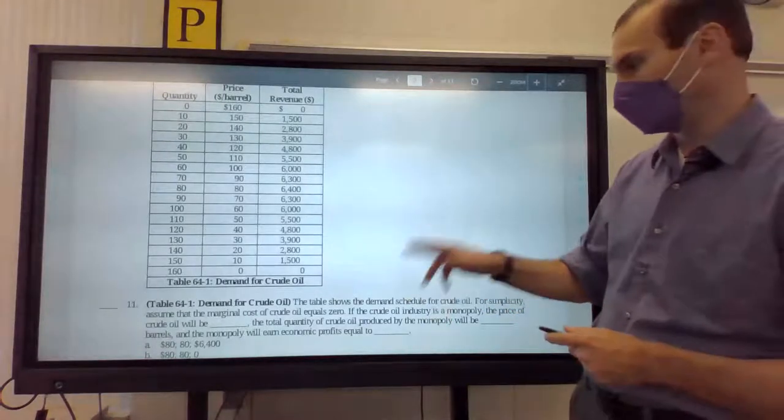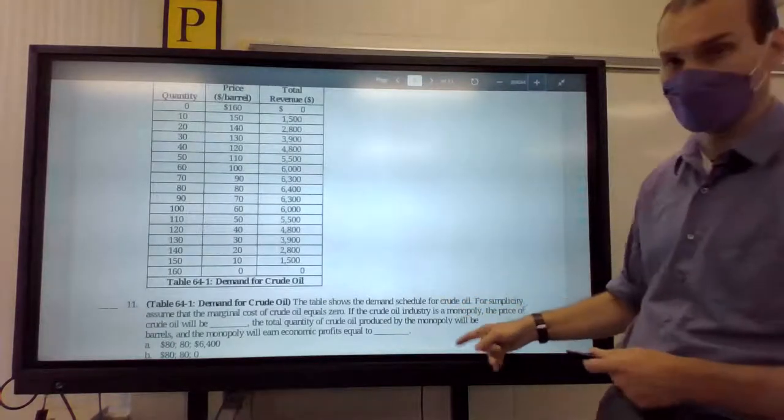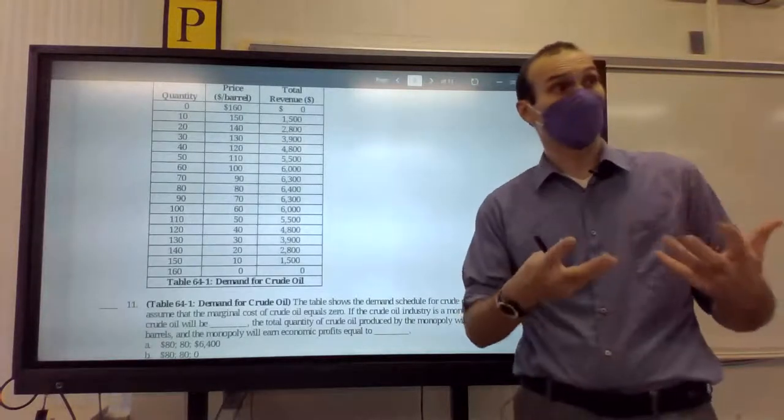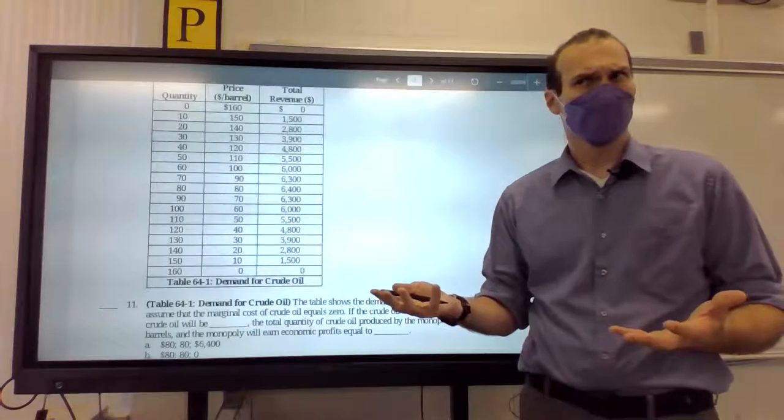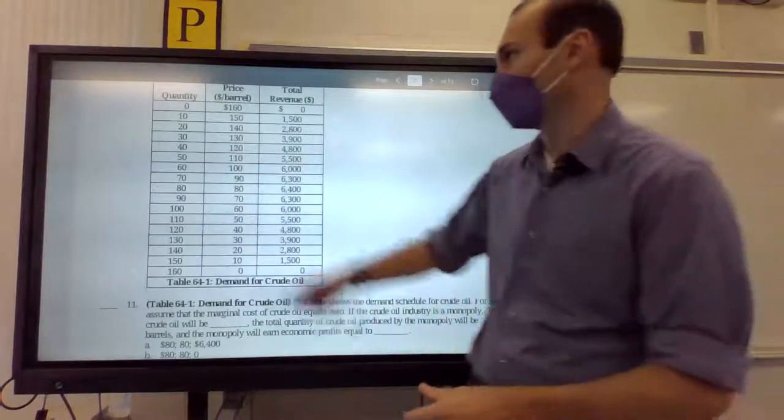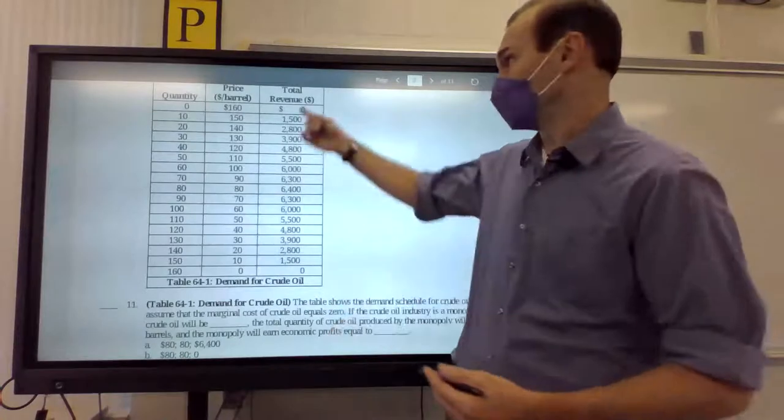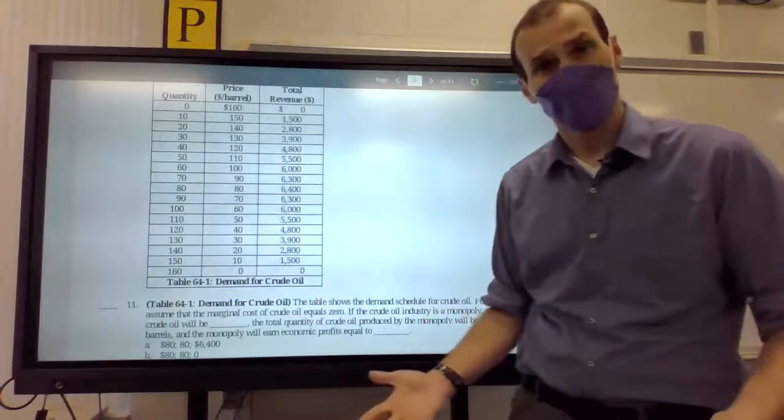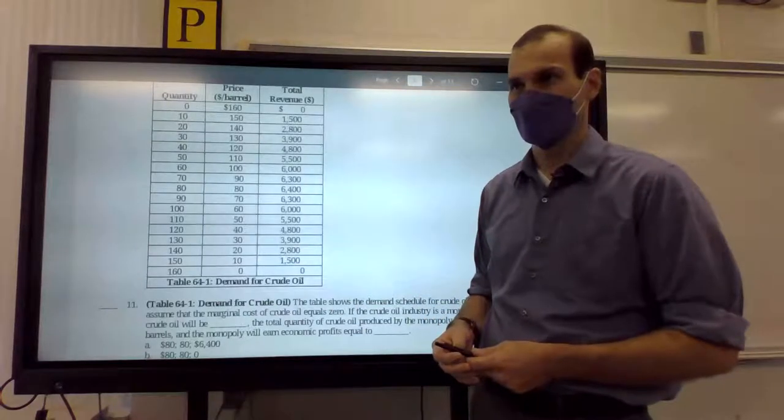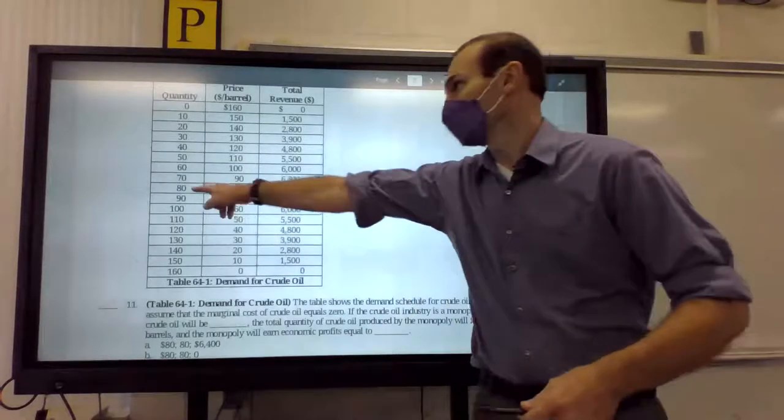If the crude oil industry is a monopoly, the price of crude oil will be blank. The total quantity of crude oil produced will be blank barrels and the monopoly will earn economic profits equal to blank. Okay, so if you have no cost and you want to maximize profits, you just maximize what? Total revenue. So where's total revenue maximized? Well, we've got our quantity and our price so we can multiply them to get our total revenues, which they've already done. Oh, so where are profits maximized? Where total revenue is maximized. So essentially, find the big number and you solve the question.